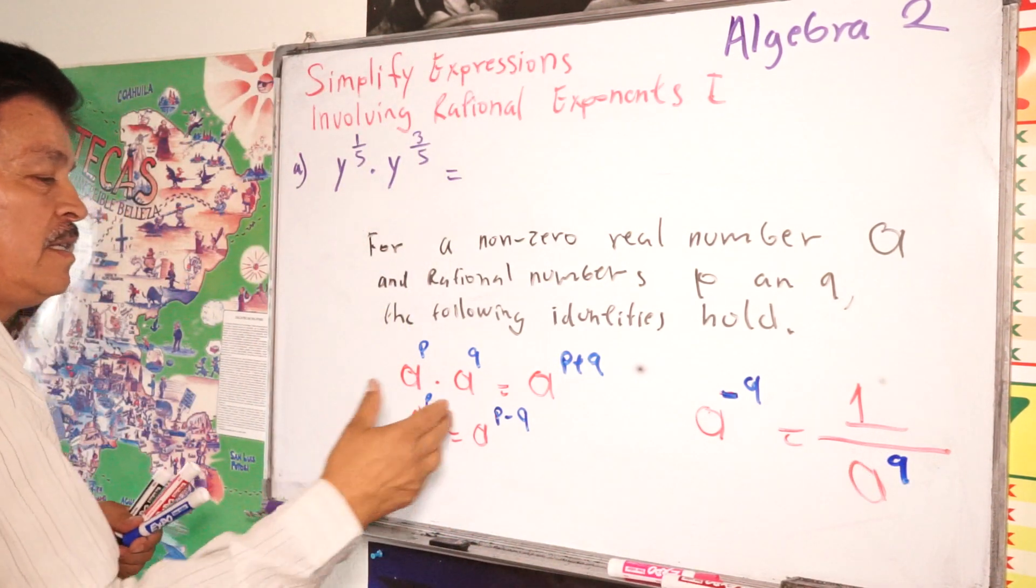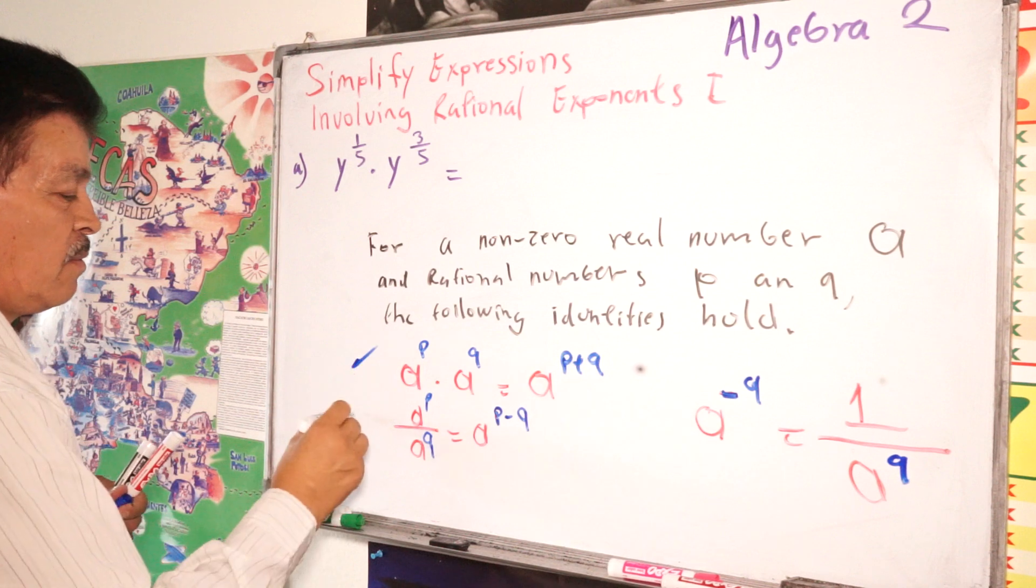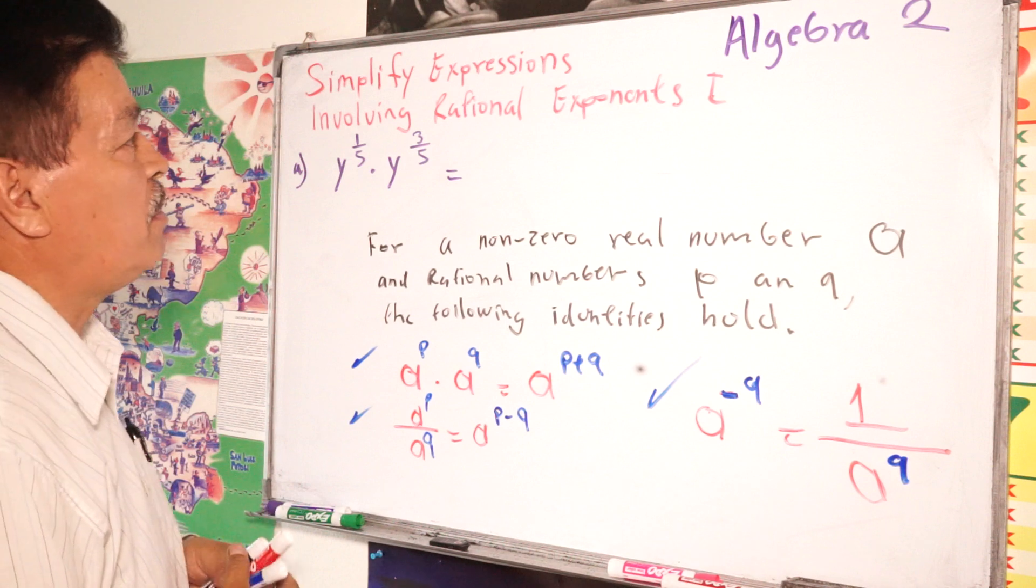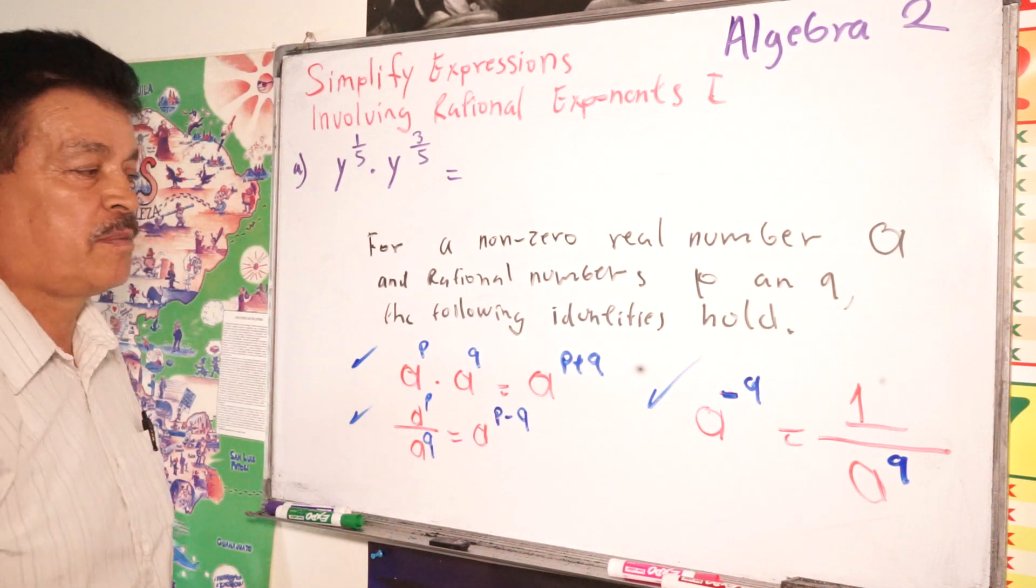This three kind of rule. This one, this one, we need to remember to work with the, when you simplify the expression involving rational exponent, okay?